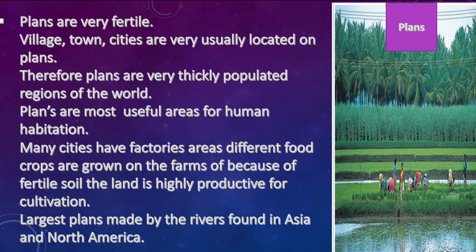Plains are very fertile. Villages, towns, and cities are usually located on plains. Therefore, plains are very thickly populated regions of the world. Plains are the most useful areas for human habitation. Many cities have factories in these areas. Different food crops are grown on the farms because of fertile soil. The land is highly productive for cultivation. Large plains made by rivers are found in Asia and North America.